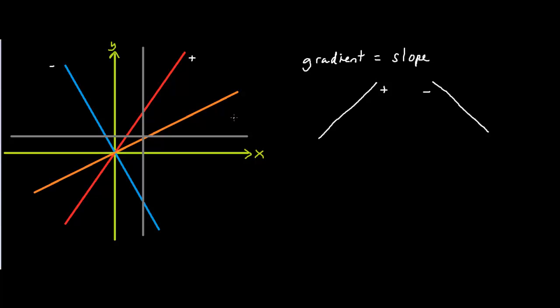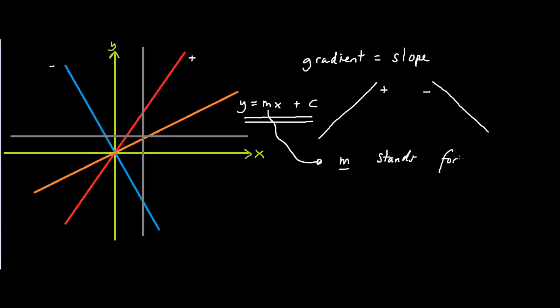Now in algebra, we say that lines have the equation of the form y equals m multiplied by x plus a constant. Now this m that you see in this equation right here actually stands for gradient. Let me plot a few lines so that you can understand why lines have this equation.